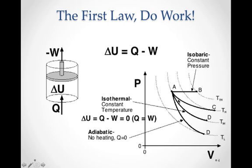Another possibility is following the path from point A to point C. In this case, we still get work out and we're still raising the temperature, so the input heat must again increase the internal energy and also do the work. However, this process is no longer isobaric — the pressure does decrease a little bit.